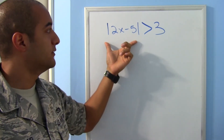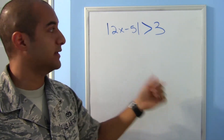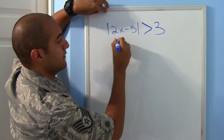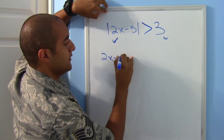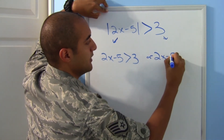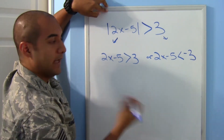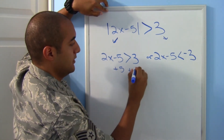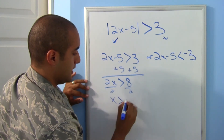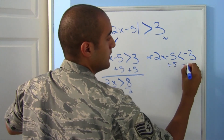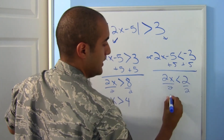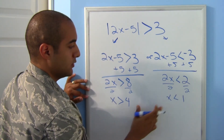We have absolute value of 2x minus 5 greater than 3. Since it's a greater-than, the split gives two inequalities: 2x minus 5 greater than 3, or 2x minus 5 less than negative 3. Solving the first: add 5, get 2x greater than 8, divide by 2, x is greater than 4. Solving the second: add 5, get 2x less than 2, divide by 2, x is less than 1.